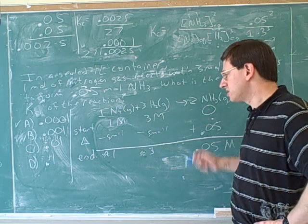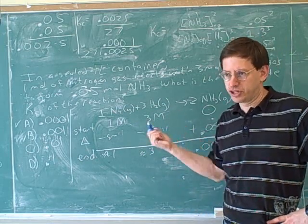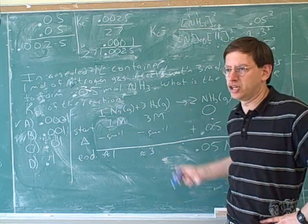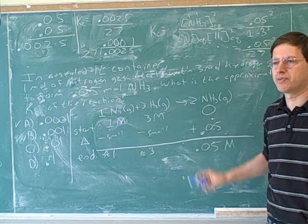We should very often be looking to use start-change-end tables, especially because here we had both starting amounts and ending amounts. So it helped to organize our work. If all we care about is the changes, we can do that just with the stoichiometric coefficients, just with conversions like we did last time, maybe without the start-change-end table. But if we're going between starting and ending amounts, this is a good approach.